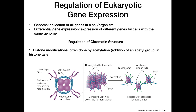So let's say in this cell we want to express some gene that's on one of these pieces of DNA wrapped really tightly around one of these histones. What we can do is acetylate those histone tails, which is going to open up this DNA and make it looser and available for transcription. Now we can actually access these genes and transcribe them into mRNA, and then translate them into a protein.